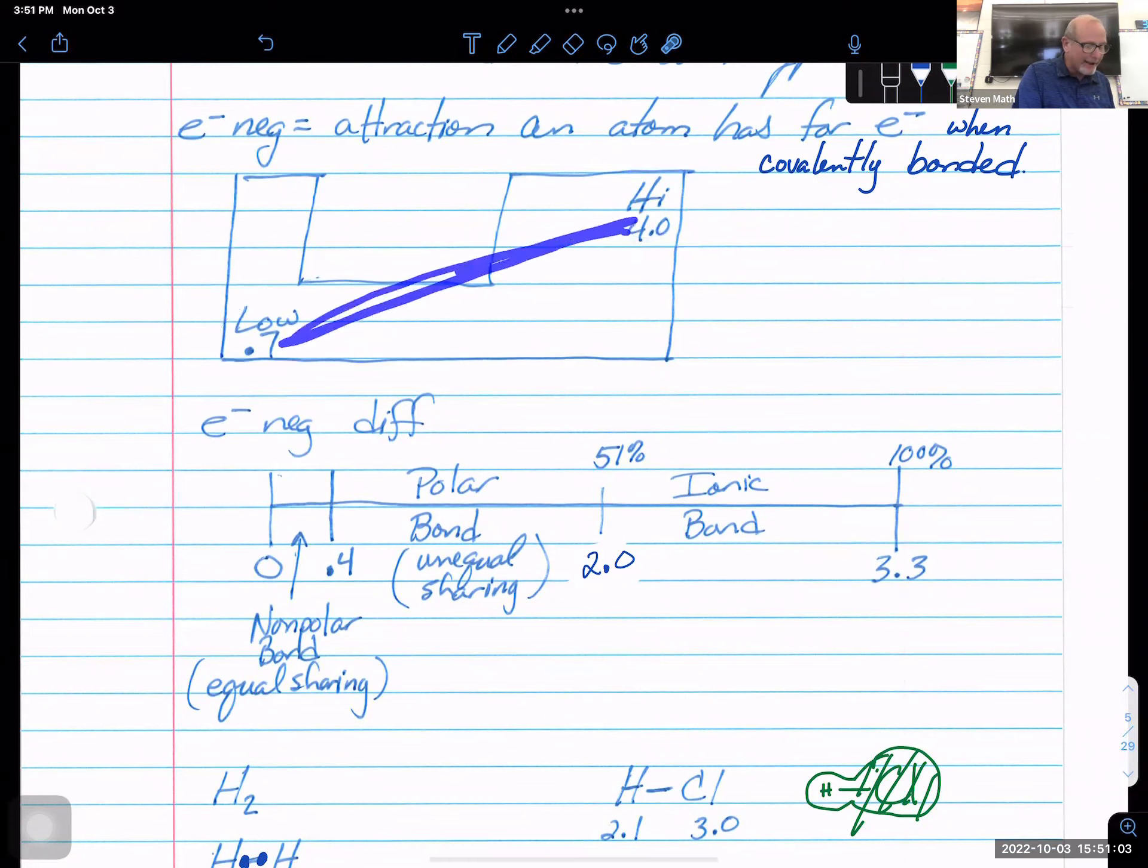And so when we look at the maximum difference between those would be 3.3. That would be a 100% ionic bond, taking probably something like cesium and fluorine and putting them together. This is also going to have a very high energy of interaction, a high lattice energy as well. So that would be 100%. Now, if we take half of 3.3, we end up at 1.67. So anything with an electronegativity difference of 2.0 to 3.3, we are introducing ionic bonding at that point.